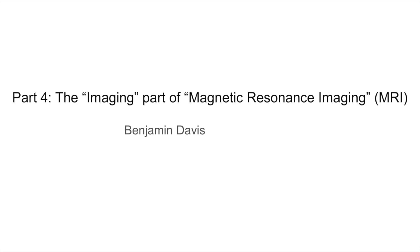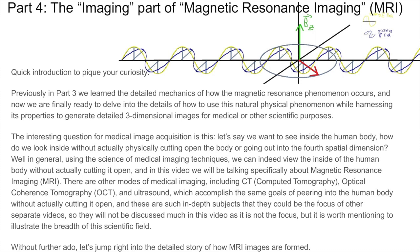Part 4: the imaging part of magnetic resonance imaging, MRI. Quick introduction to pique your curiosity. Previously in Part 3, we learned the detailed mechanics of how the magnetic resonance phenomenon occurs, and now we are finally ready to delve into the details of how to use this natural physical phenomenon while harnessing its properties to generate detailed three-dimensional images for medical or other scientific purposes.